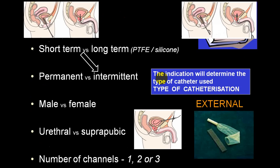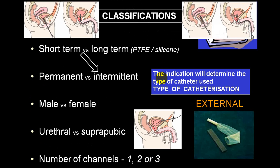Catheterization can be short-term (temporary or intermittent) or long-term (permanent indwelling catheter). For long-term use, an indwelling catheter is used; for short-term, a simple catheter suffices. It can be placed in male or female via per urethra or suprapubic route. Depending on indications, single channel, two-channel, or three-channel catheters are used: three-channel for irrigation, two-channel for indwelling, and single channel for intermittent or self-intermittent catheterization.